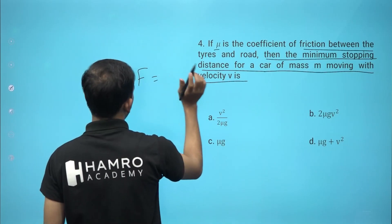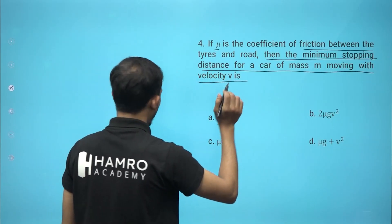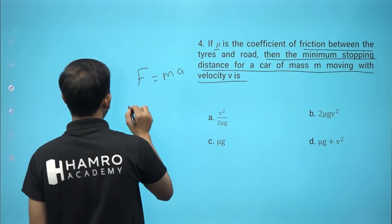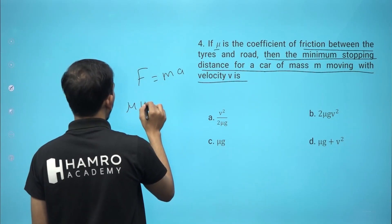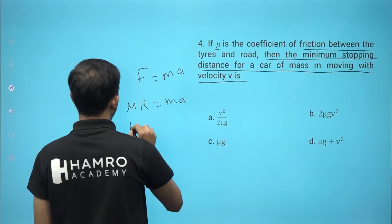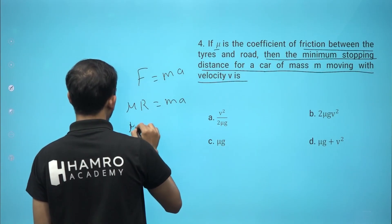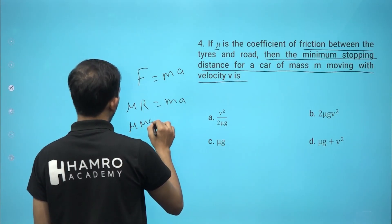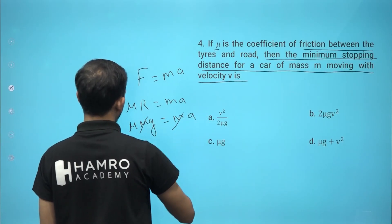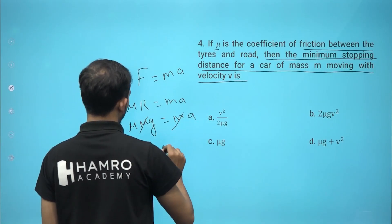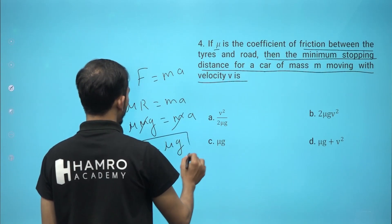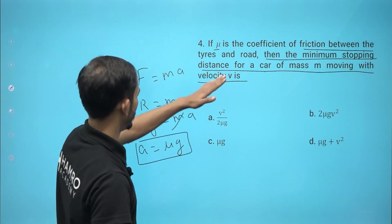The frictional force equals mu R equals mu mg. Using Newton's second law, F equals ma, so m cancels and acceleration a equals mu g. On a road, the deceleration of the moving car is mu g.